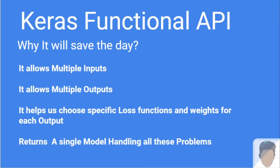Let's look at why Keras Functional API will save the day. It allows multiple inputs and outputs — that itself is a big upgrade compared to the sequential model. We can input different types of inputs like image, text, values, and categories, and get multiple outputs like classification and regression. It also helps us to specify loss functions and weights for each output, and we can handle the loss and weights of each layer independently. The major part is that it returns a single model handling all these problems.